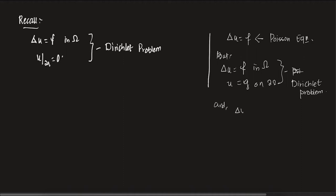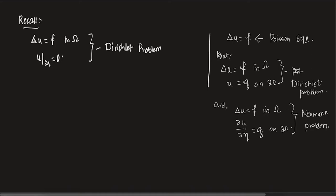You can also have this kind of problem: del U / del eta equals G on del omega, where eta is the outward normal at every point on the boundary. If the data is given on the partial derivative and not on U, this problem is called a Neumann problem.